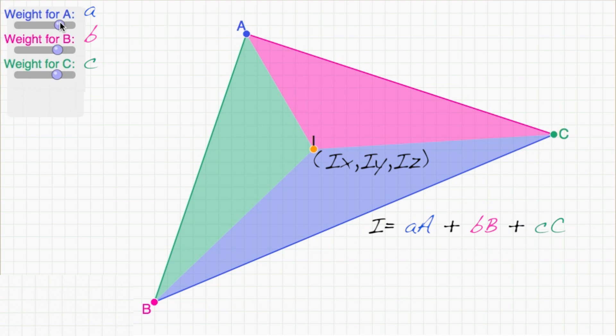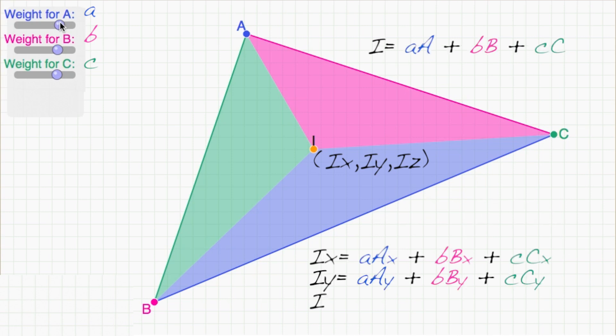The resulting equation, i equals little a times big A, plus little b times big B, plus little c times big C, represents the following three equations. One for the x coordinate, one for the y coordinate, and one for the z.